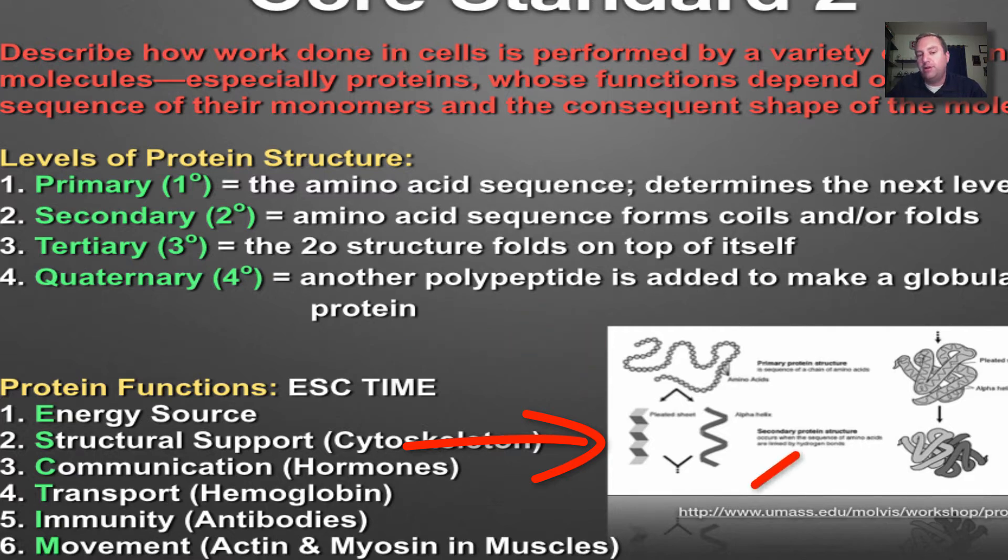And then tertiary, you're going to take your secondary structure and you're going to wad it up together. And then finally, when it comes to quaternary, you're going to add another polypeptide, and you're going to have what's called a globular protein. You can see all that here in this picture down below.